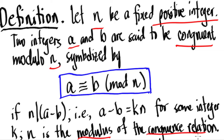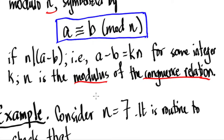The modulus is like the clock in clock arithmetic — it's the value that gives you the remainder. Just keep in mind that a is congruent to b modulo n if n divides the difference a minus b, or conversely, if n divides both a and b. The n is what we call the modulus of the congruence. Let's cite some examples.